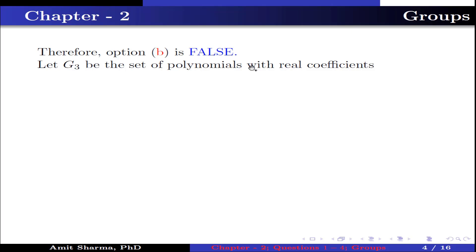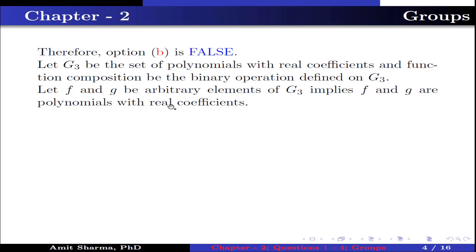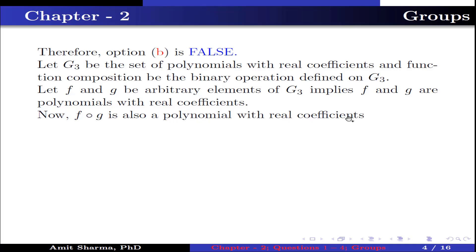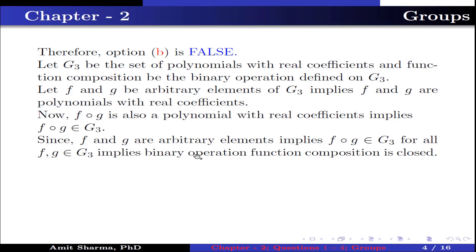Let G3 be the set of polynomials with real coefficients and function composition be the binary operation defined on G3. Let f and g be arbitrary elements of G3, meaning f and g are polynomials with real coefficients. Now f∘g is also a polynomial with real coefficients, which implies f∘g belongs to G3 for all f, g belonging to G3. This implies binary operation function composition is closed. Therefore option C is true.